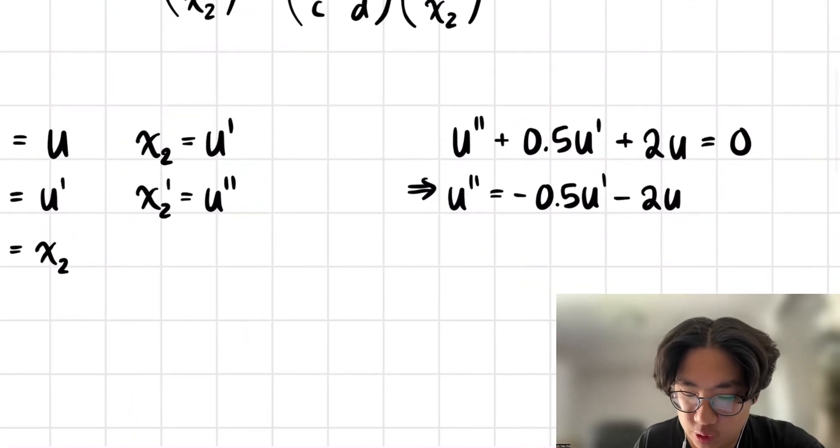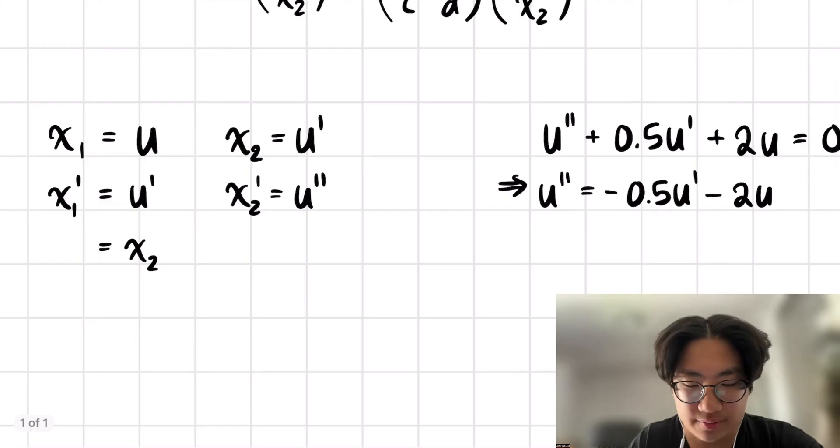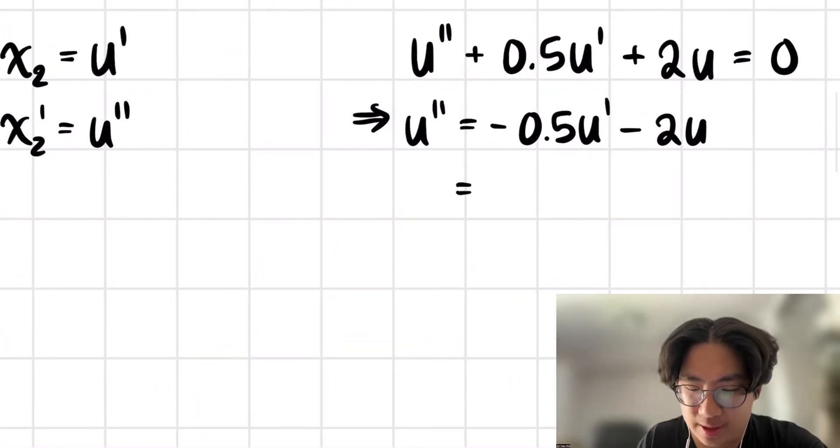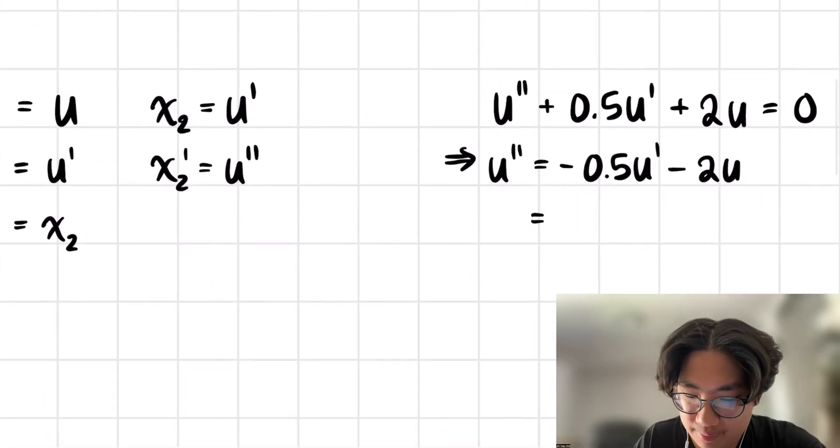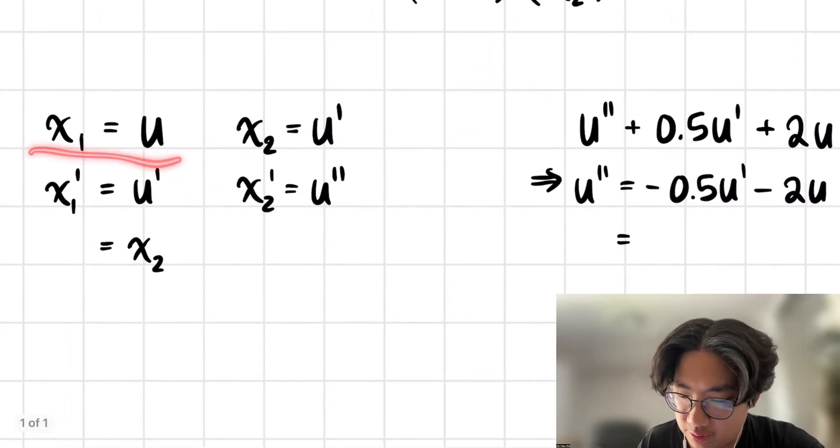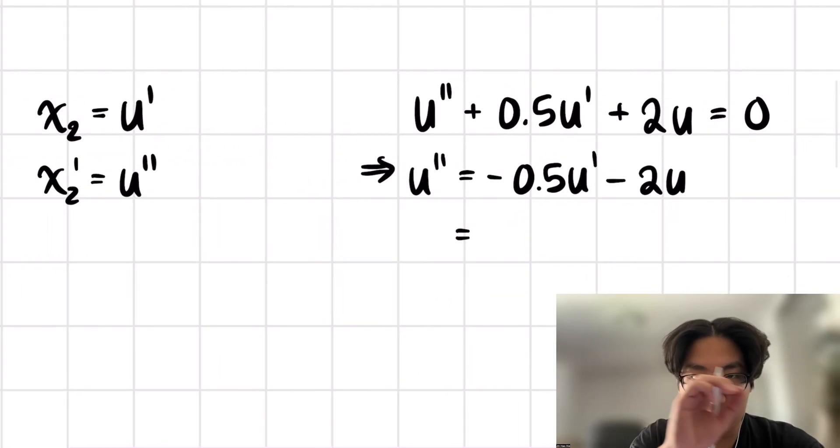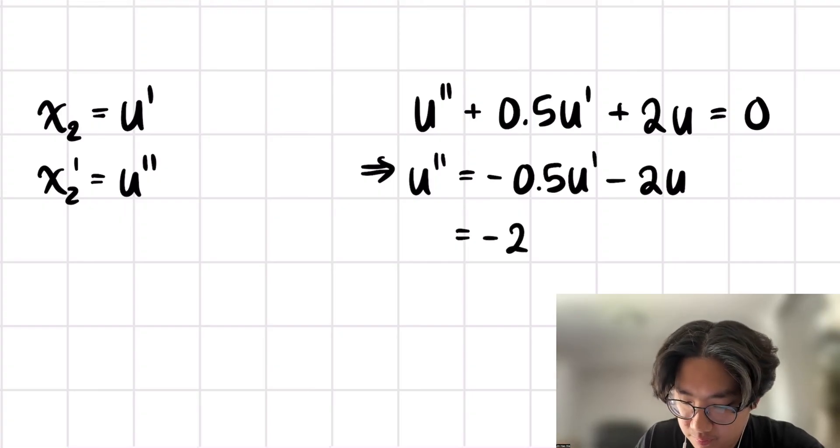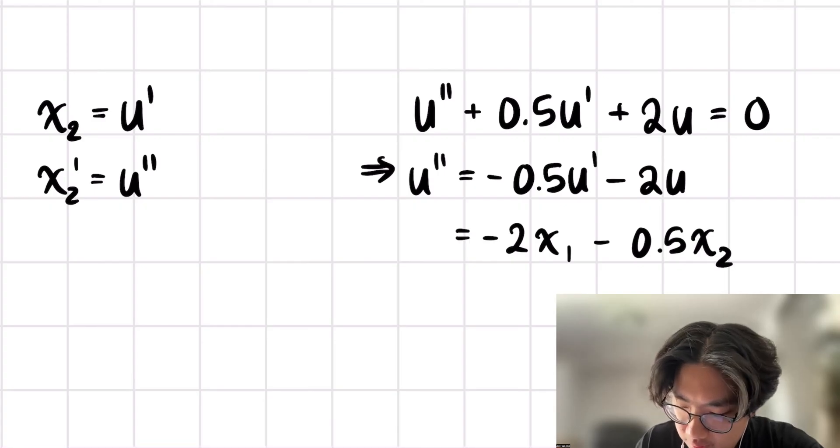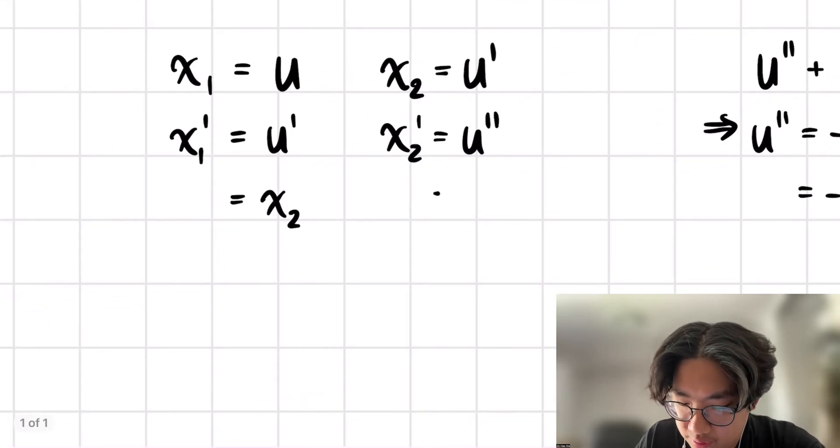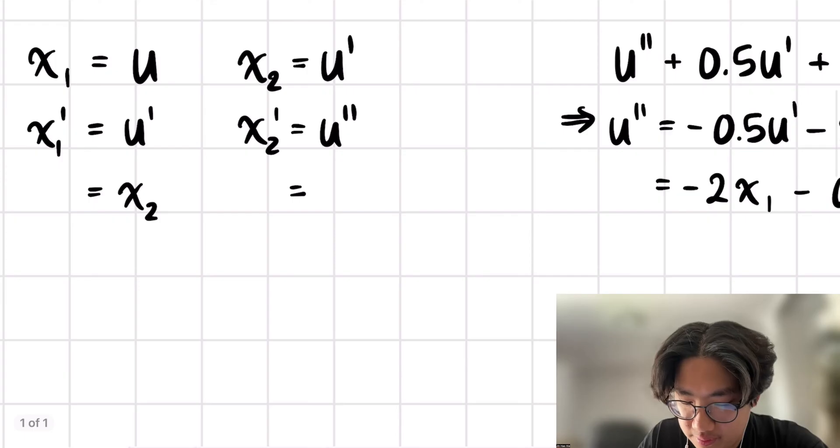From here, what we then notice is that we're able to replace u prime and u with x1 and x2. We have that x1 is equal to u, and we have that x2 is equal to u prime. So replacing them and writing them in x1 to x2 order, we have negative 2x1 minus 0.5x2.